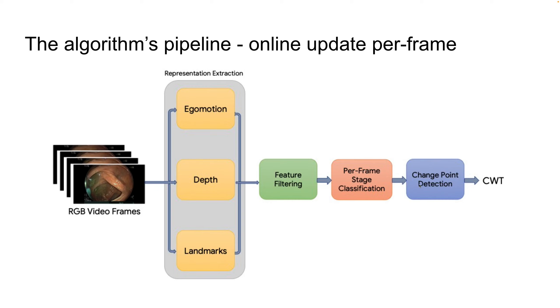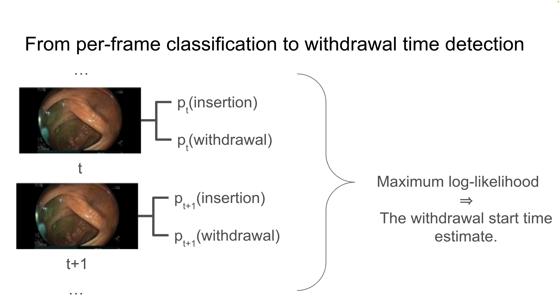So the pipeline goes as follows: the frames go into a representation extraction. This is a very noisy feature layer. We do feature filtering or feature smoothing. After we have the robust features, we run a per-frame classifier which classifies if a frame is in the withdrawal phase or in the insertion phase.